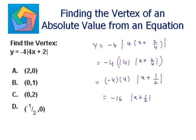We can also write this as negative 16 times absolute of x plus 1 over 2, plus 0. So the vertex becomes negative 1 over 2, comma 0, which is the answer in part D.